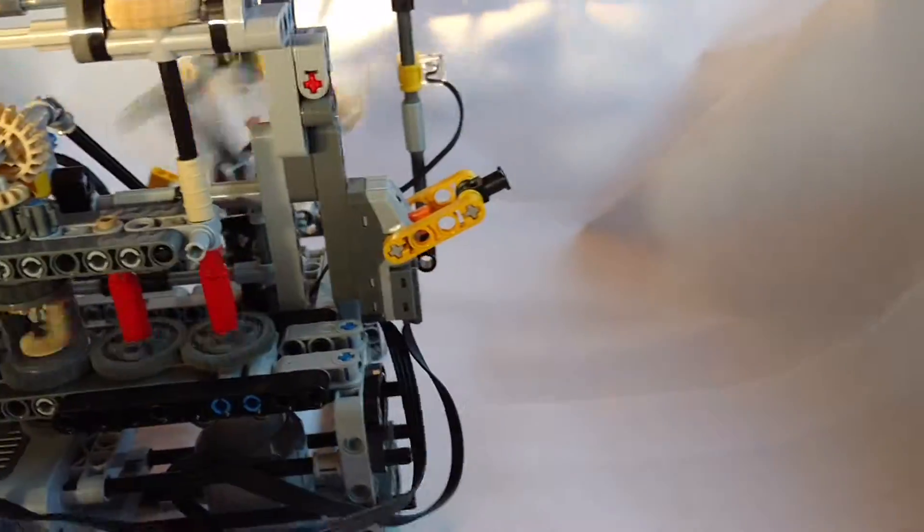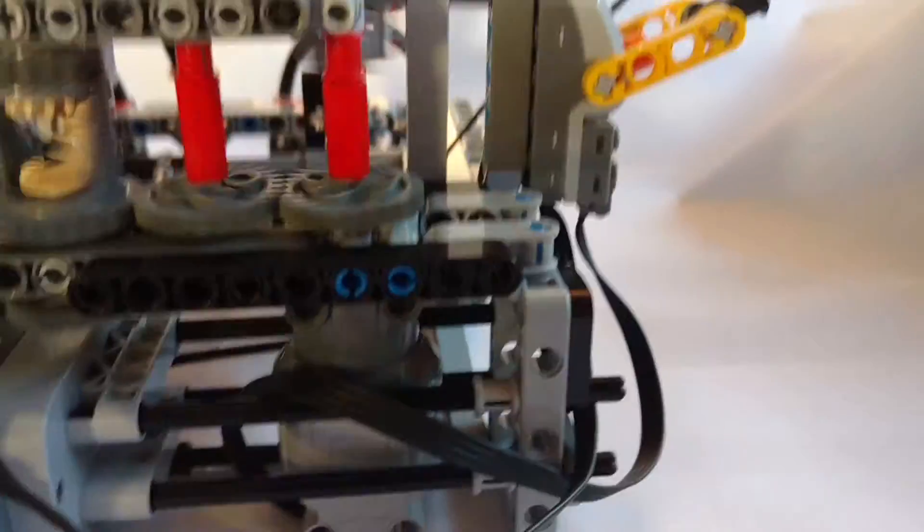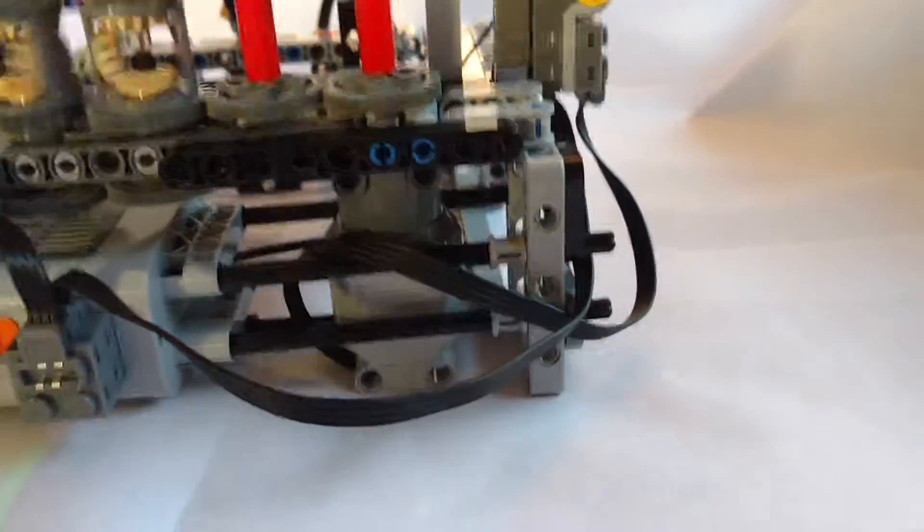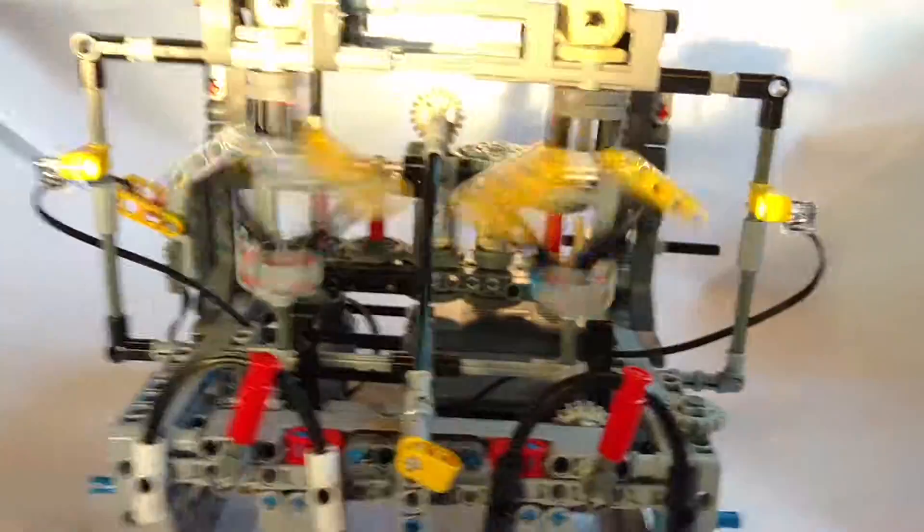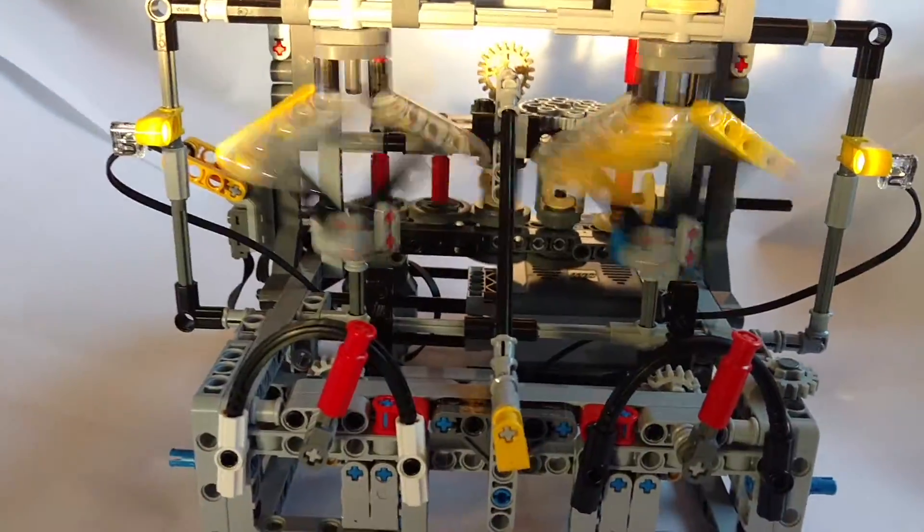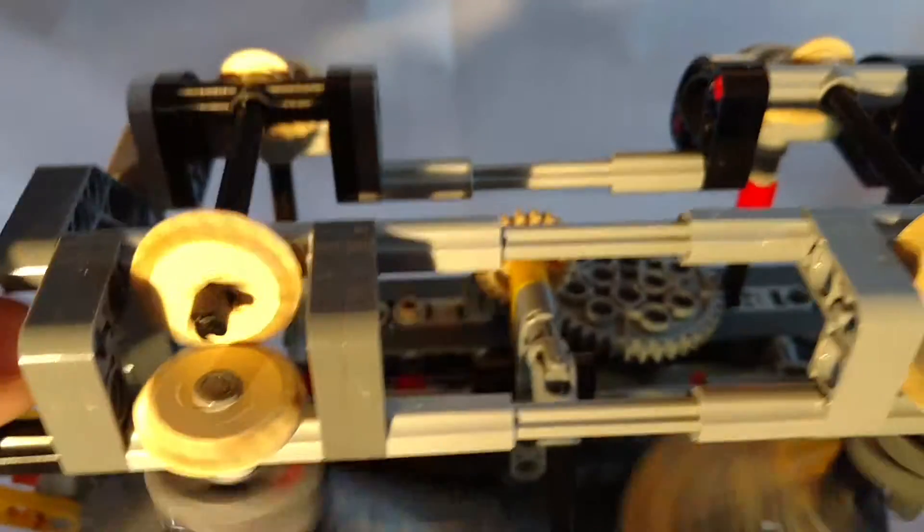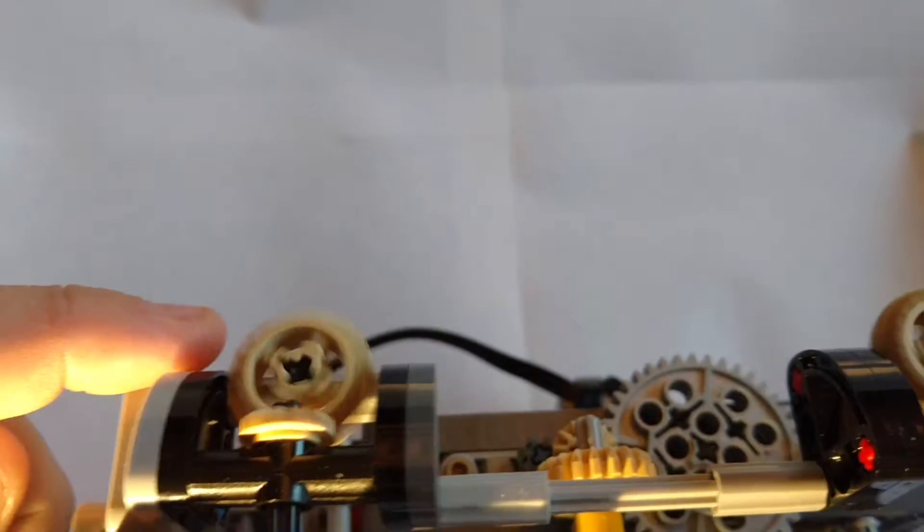Now, Nico built his with an XL motor, which I did not have, so I had to use an L motor. The difference between an L and an XL motor is about 70 RPMs. Which made a big difference in these two. But, to this here gearing, what we have on the back side.